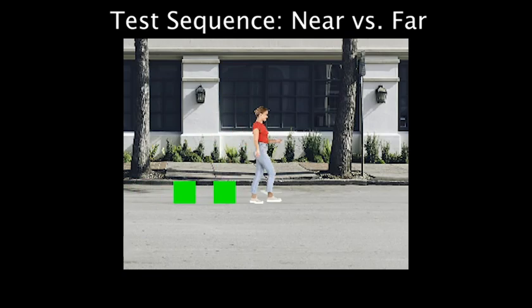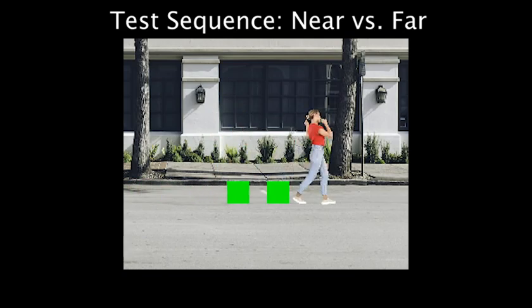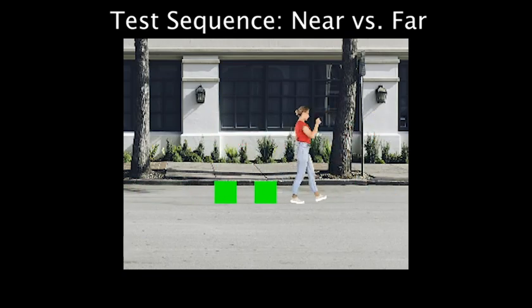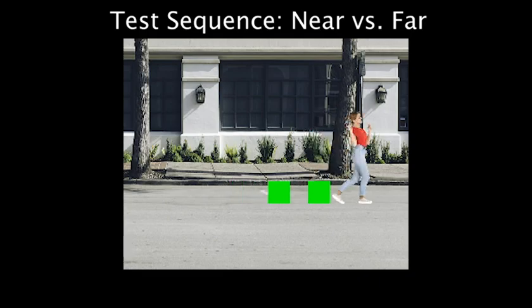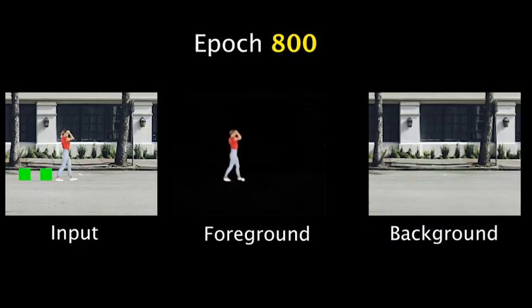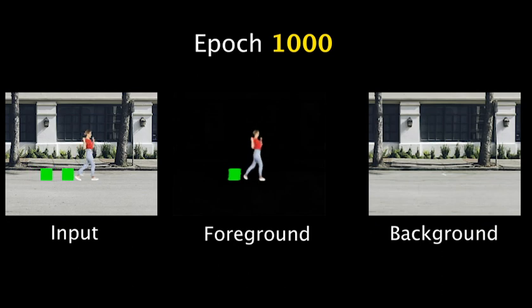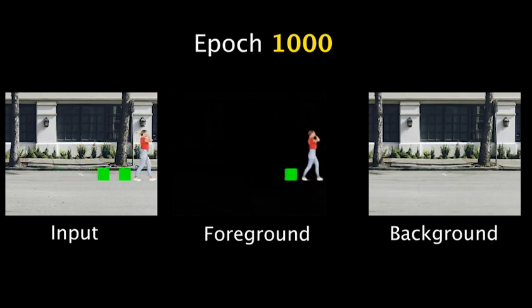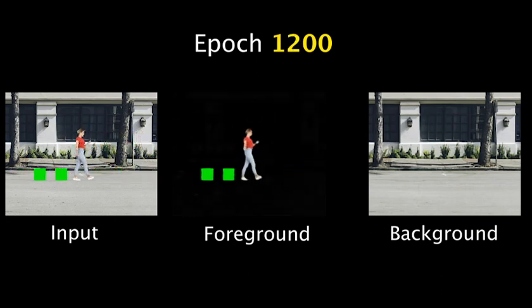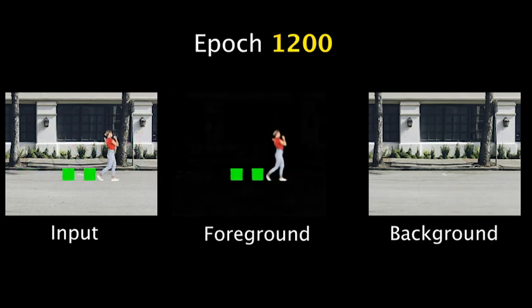Nearby effects are learned before distant effects. In this case, two green squares have the same motion, but one is closer to the person. The network learns the person after epoch 800, the near square after epoch 1000, and the farther square after epoch 1200.